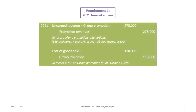We can now record a journal entry for the actual gizmos redeemed. In actual fact, the equivalent of 550,000 boxes were redeemed. So 550,000 divided by 100 codes is 5,500 gizmos, times a $50 fair value, equals $275,000. We debit the unearned revenue account for the gizmo promotion for $275,000 and credit promotional revenues for $275,000.